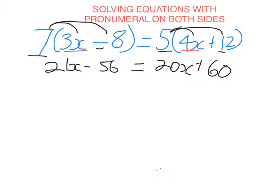Now it looks just like the previous example. We subtract the x with the lowest coefficient, so I'm going to subtract 20x from both sides. I'm left with x minus 56 equals 60.